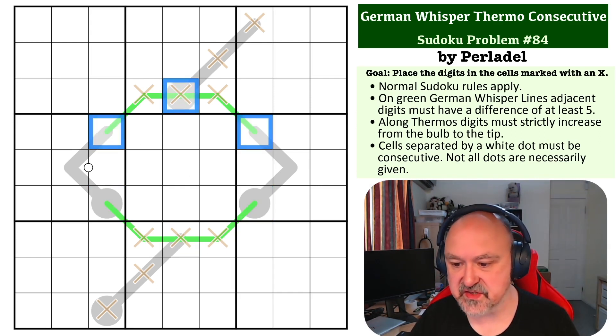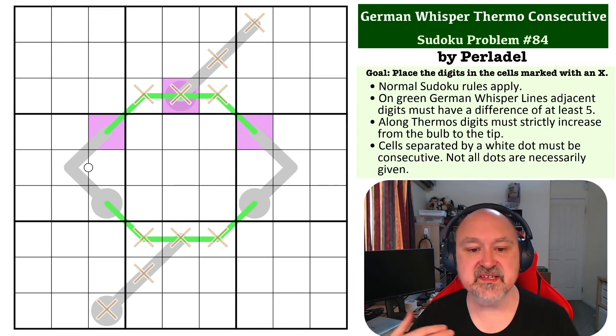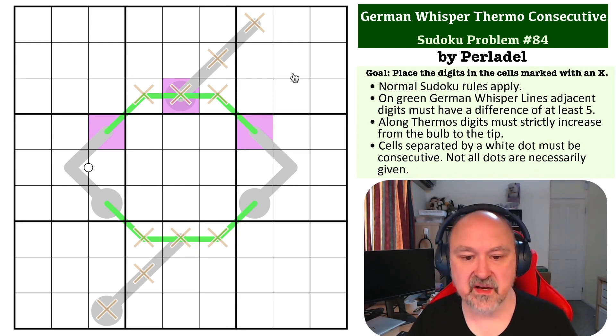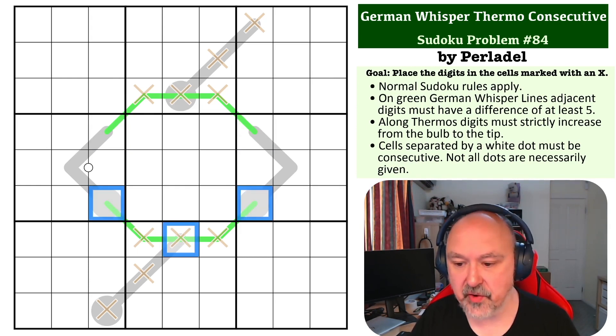So these three digits here, we don't know what they are, but they're going to be the same high-low polarity. So the question we want to ask ourselves is what happens if those digits there are high, using yellow for high.